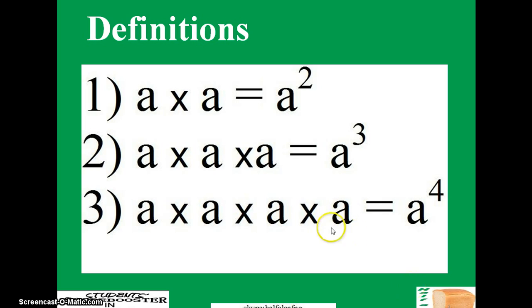Now let's take a look. We have a multiplied by a equals a raised to power 2. The meaning here is that this a is ordinarily raised to power 1, and this a is also raised to power 1. Going to the second one, you see a times a times a equals a raised to power 3, and you have a times a times a times a equals a raised to power 4.